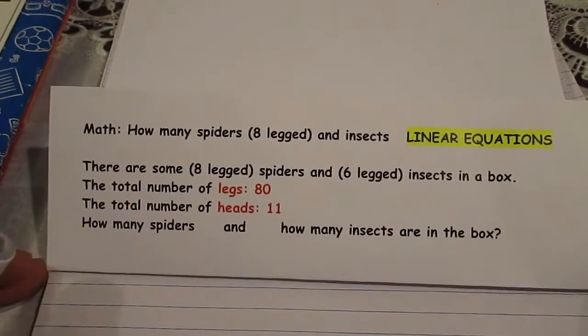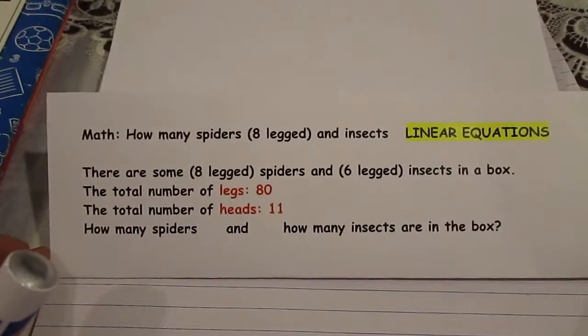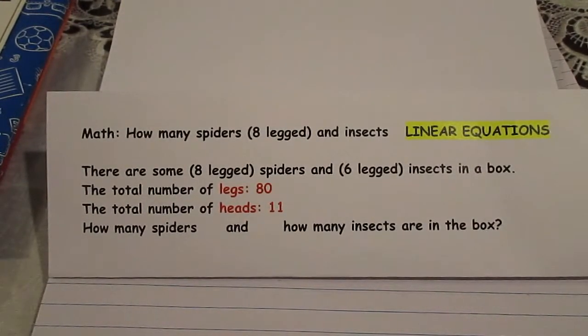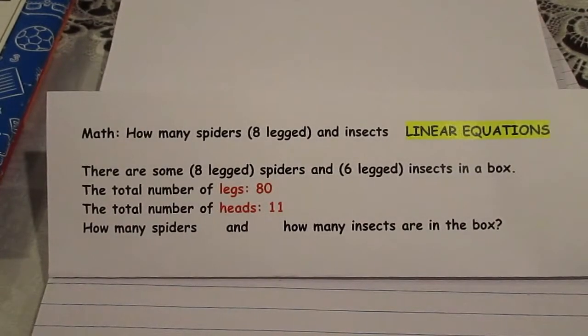Okay, let's start with this sum. There are some spiders and insects in a box. Spiders have eight legs, the insects, bugs or ants have six legs, and they give you the total number of legs which is 80 in this example and the total number of heads in the box is 11. And they want you to find out how many spiders and how many insects there are in the box.